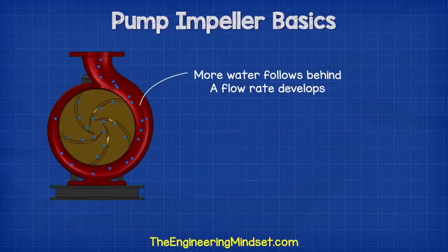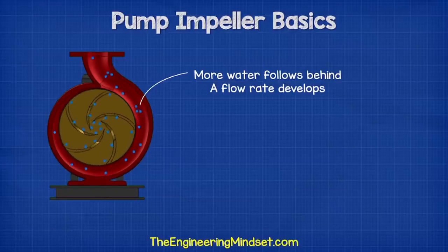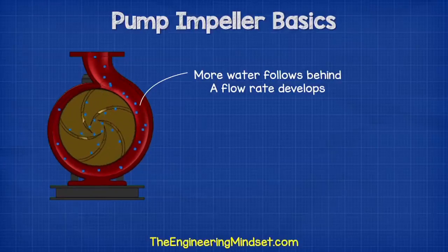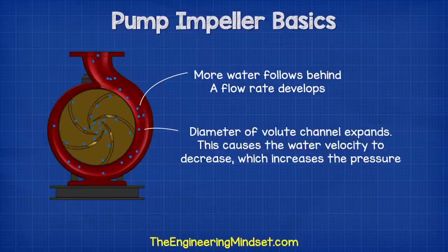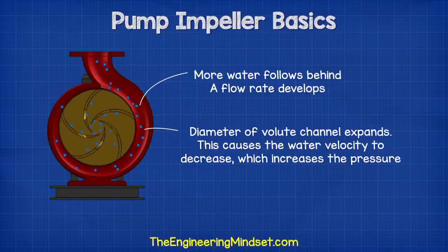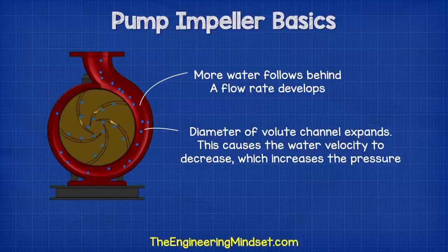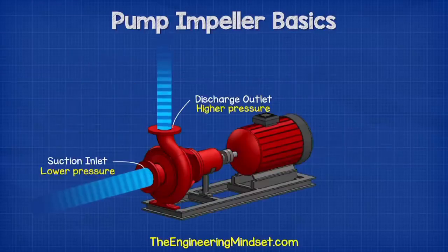More water follows behind and so a flow develops. The volute channel has an expanding diameter as it spirals around the circumference of the pump casing. As it expands, the velocity of the water will decrease, resulting in pressure increasing. This expanding channel therefore allows more water to keep joining and converting into pressure, so the discharge outlet is at a higher pressure than the suction inlet.